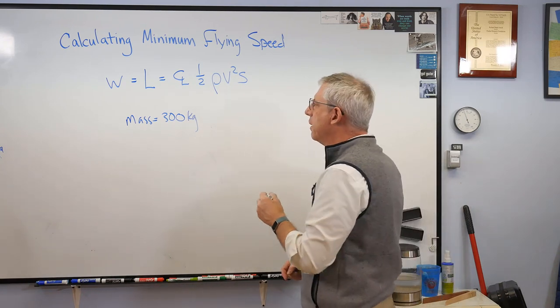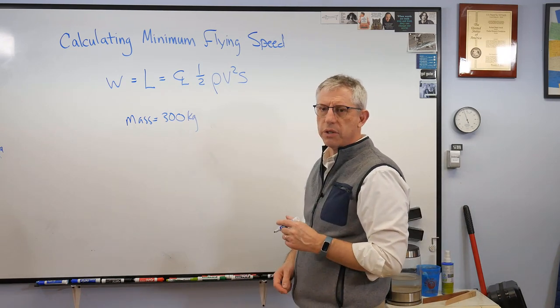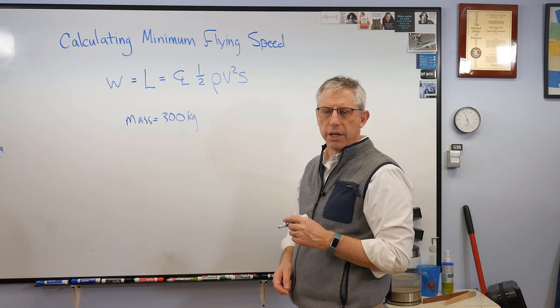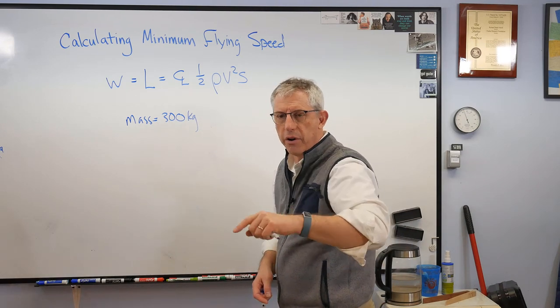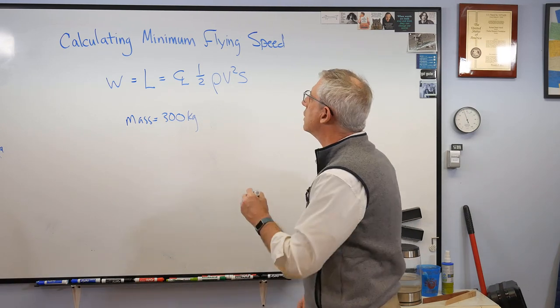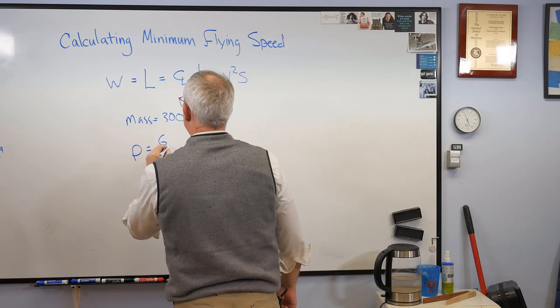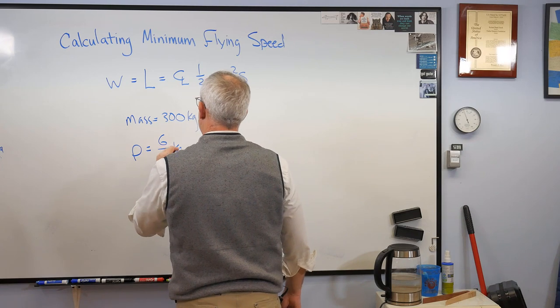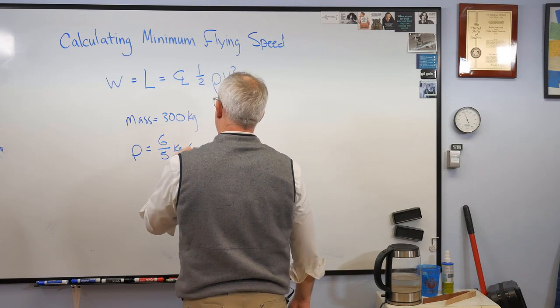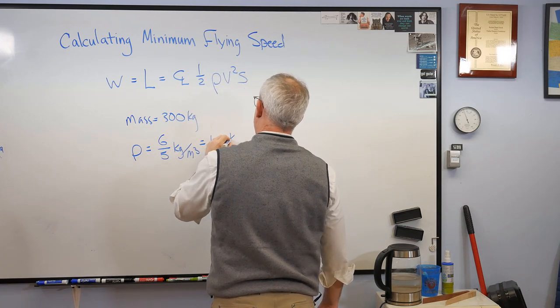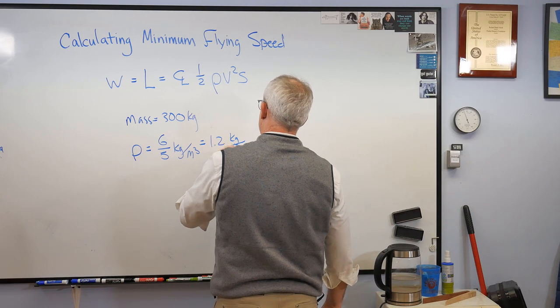We're going to need the acceleration of gravity. That's 9.81. As you see me looking down, I'm actually looking at my monitor down there that has all this stuff on it for us. Okay. What else do we need? Rho. All right. We're going to call that 6 over 5 kilograms per cubic meter, 1.2 kilograms per cubic meter, which is a lot. You know, air weighs more maybe than you thought it did.